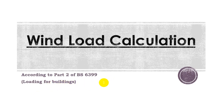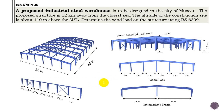Here is our proposed three-part frame made of steel. We don't really care about the material — whether it's steel, RCC, or timber — because we are not going to design it; we only need to determine the wind load on it. It is proposed to be constructed in the city of Muscat, the capital of Oman. There are certain parameters we need to know, which must be either given or assumed. For instance, the distance away from the coast must be given.